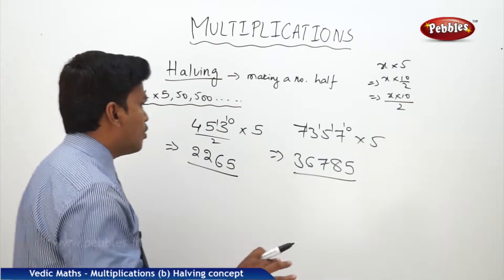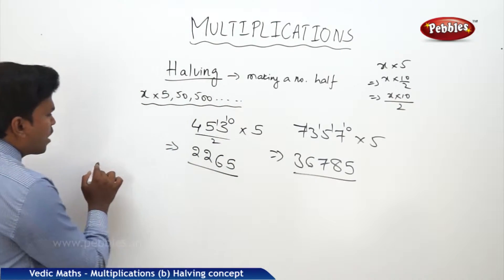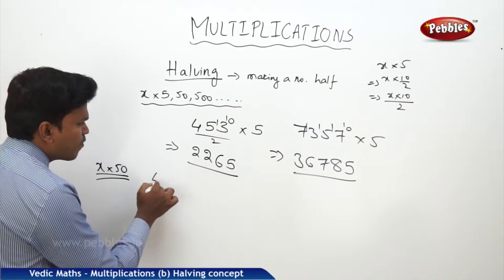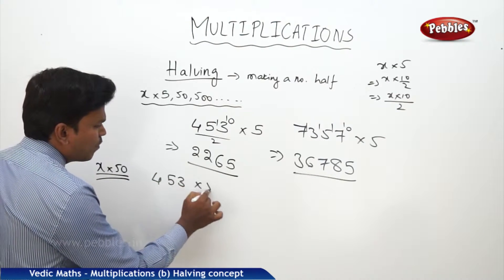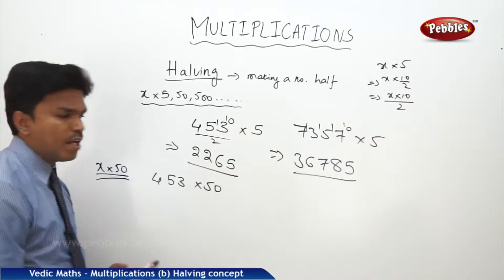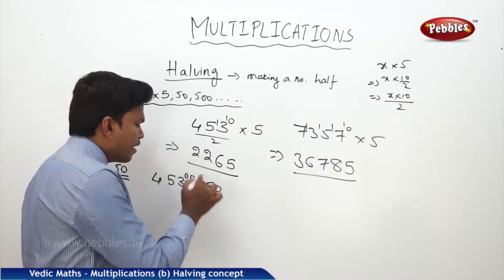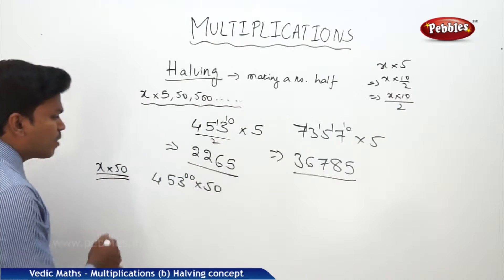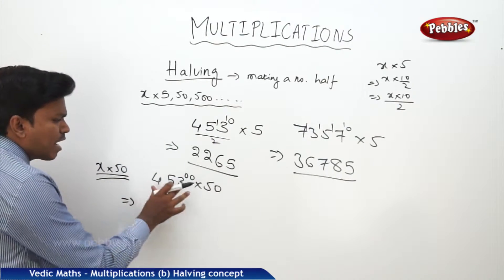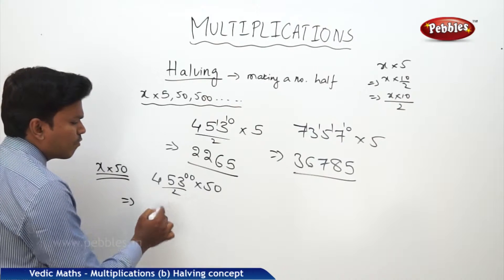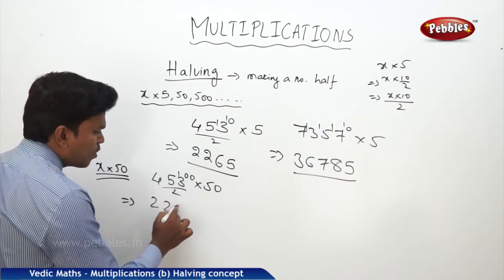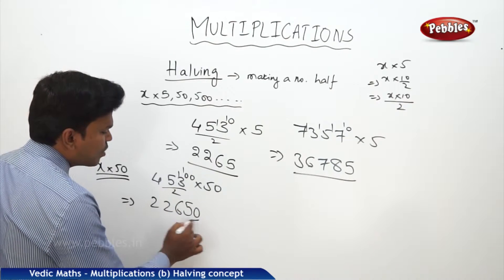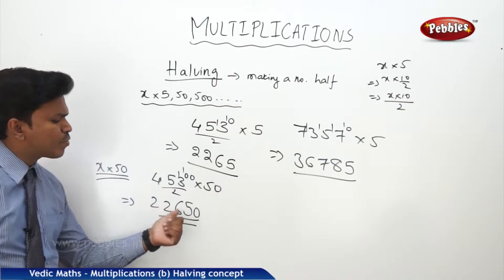Similarly we can do multiplication by 50. For any given number × 50, take 453 × 50. Add two 0s at the end making 45300, then make it a half: 2 twos, 2 twos, 2 sixes, 2 fives, and drop the one extra 0 as it is. Your answer is 22650. One more example: 7357 × 5. Add a 0, make it half — 2 threes, 2 sixes, 2 sevens, 2 eights, 2 fives. Answer: 36785.